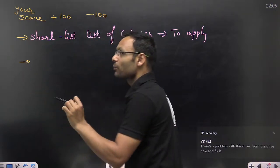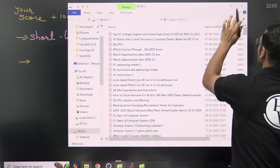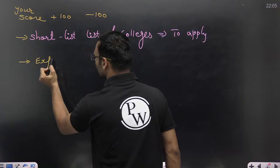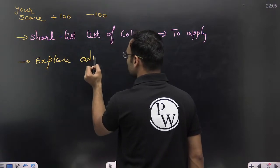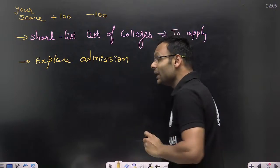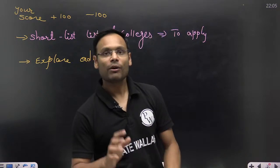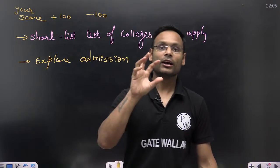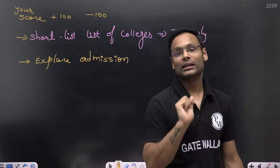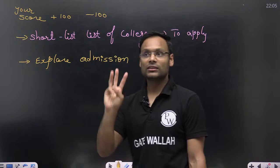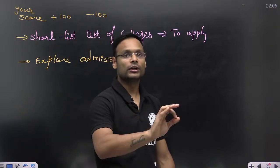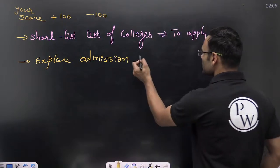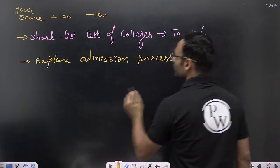After shortlisting, you need to understand the admission process for each college. Most colleges offer direct admission through your GATE score, but some have interviews — like MTech in AI at IISc Bangalore, MTech in Computation and Data Science at IISc Bangalore, and MTech in Quantum Technology at IISc Bangalore — which have 30% weightage for a written test, interview, or both, depending on the course. So explore the admission process.